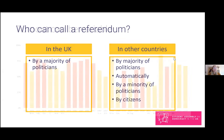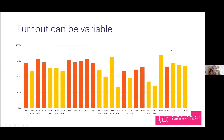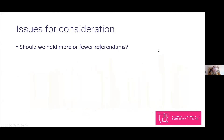In some referendums, turnout has been very high — even higher than in elections. For example, there was 85% turnout in the Scottish independence referendum. But in other votes it's been quite low — only 34% of people turned out in the 1998 referendum on whether to create the position of London mayor. So it's usually best that referendums are held on issues that people are really interested in, and we should think about how to ensure high turnout and whether to hold more or fewer referendums.